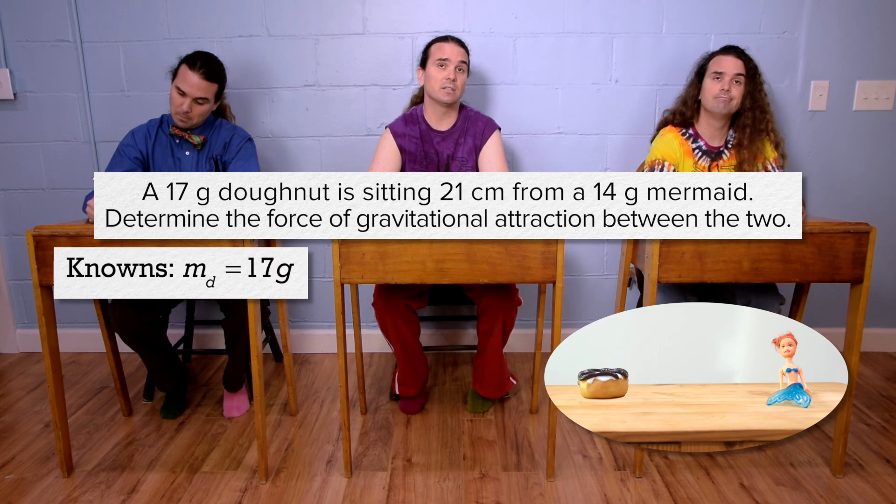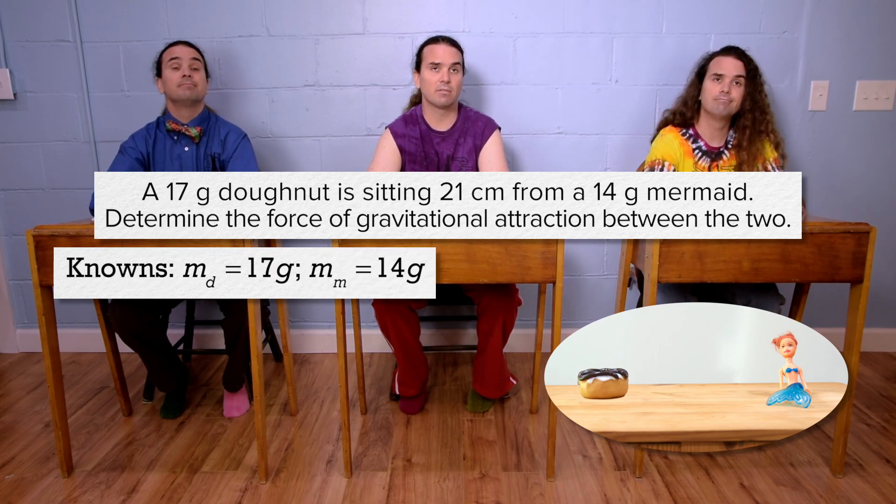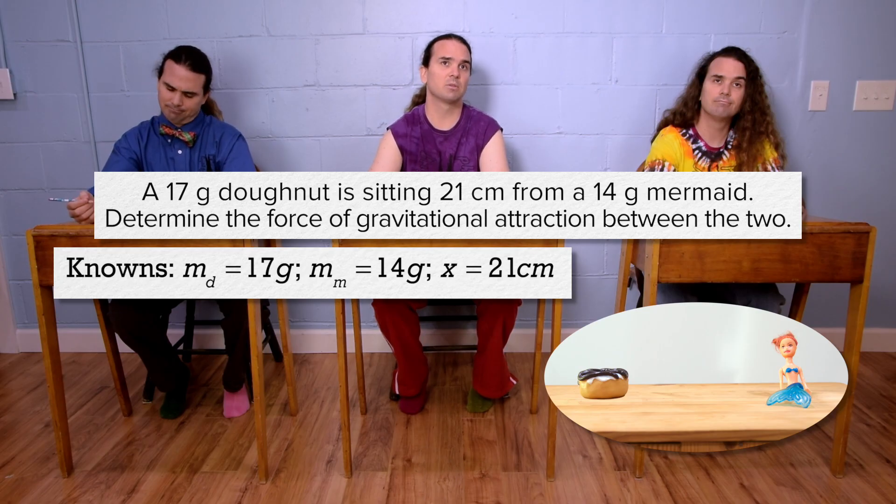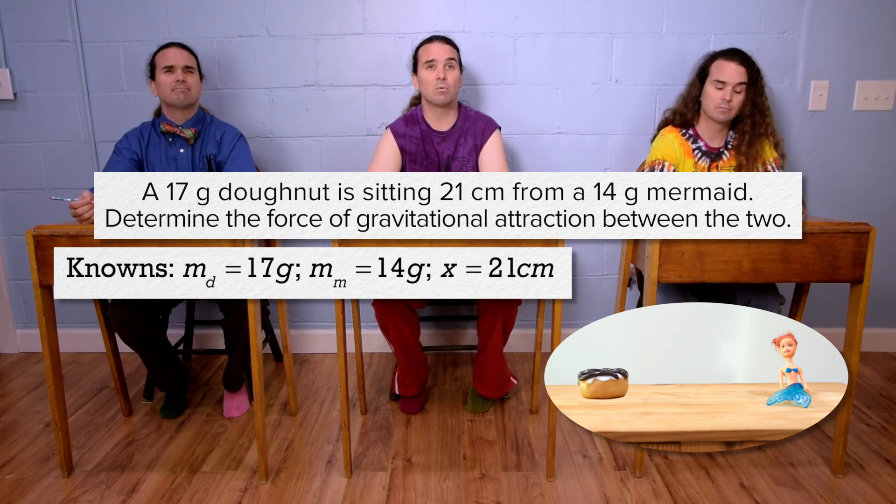Mass of the donut is 17 grams, mass of the mermaid is 14 grams, and the distance, let's call it x between the two of them, is 21 centimeters.